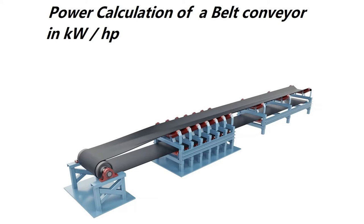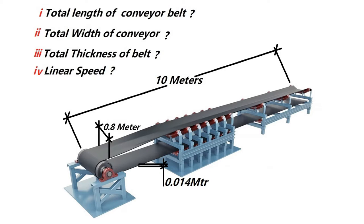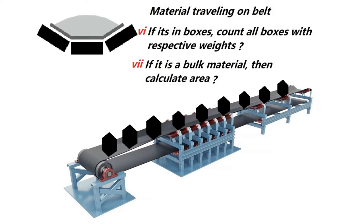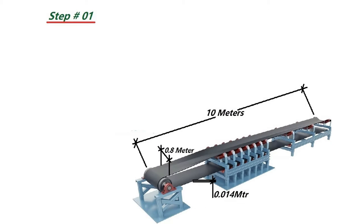Hello guys, today we will learn the power calculation of a belt conveyor. We need the belt length, belt width, thickness, and the linear speed. Also, material traveling on the belt can be in box form or bulk material. We calculate the box or cross-section area. Here we can see a stepwise method.